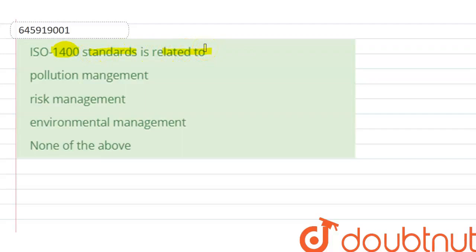So first of all, what is ISO? ISO is an industry standard mark. In simple terms, these are the marks or standards set for various industries.